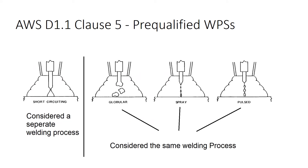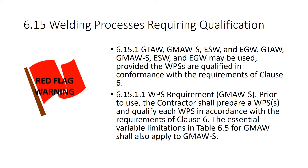Short-circuiting is considered a separate welding process even though it uses the same gases, the same wires, and the same equipment. It's the voltage and current that go into short-circuiting mode of transfer that make it a completely different animal than globular, spray, and pulse spray. Clause 6.15, welding processes requiring qualification, piggybacks off this: you can use short-circuiting mode of transfer with AWS D1.1, but you have to qualify the welding procedure in conformance with Clause 6. You need to prepare a WPS and qualify each WPS.